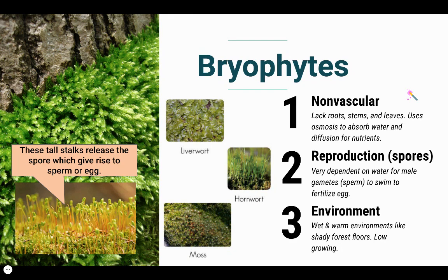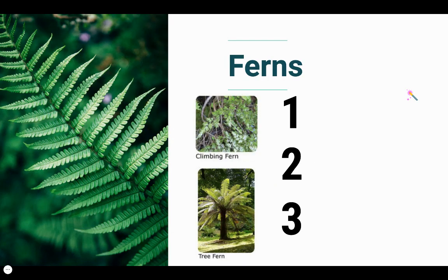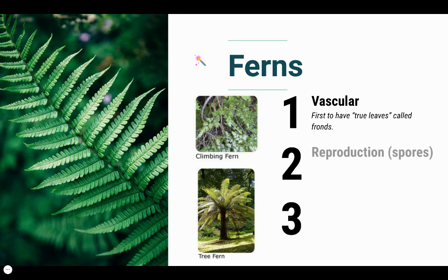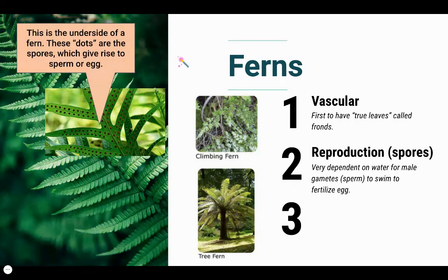Let's take a look at group two — ferns. They're a little bit more evolved than the bryophytes. They are vascular plants, and they actually do have true leaves called fronds, as you can see in this picture. They reproduce in a very similar way to the bryophytes. If you flip a fern's frond to the underside, you'll see these tiny reddish dots — these are the spores. They release and give rise to the next generation, which is either sperm or egg.